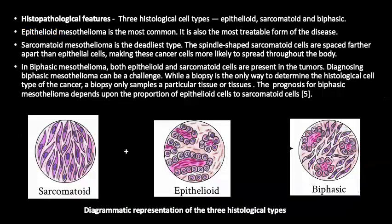Histologically, there are three cell types: epithelioid, sarcomatoid, and biphasic. Epithelioid is the most common and is most treatable. Sarcomatoid is the deadliest type, and biphasic is the type in which both cell lineages are seen, as in our case.